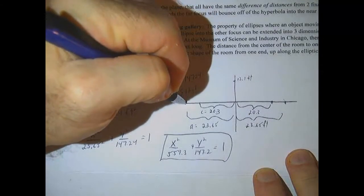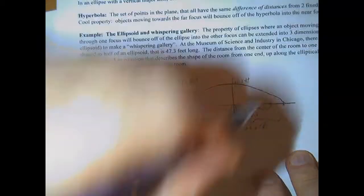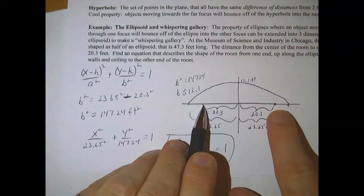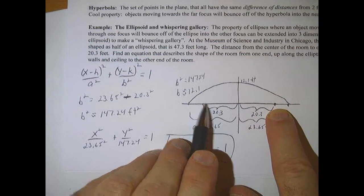So there's our shape of the room, something like that. And these are the two spots that you would stand and you would hear the whisper from a distance away. I hope you found this helpful.